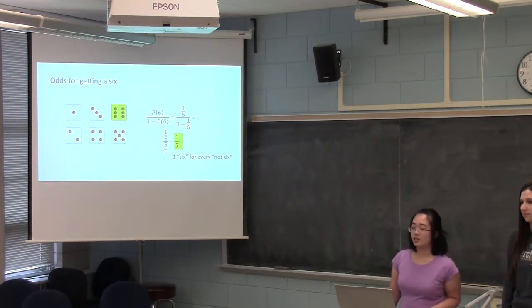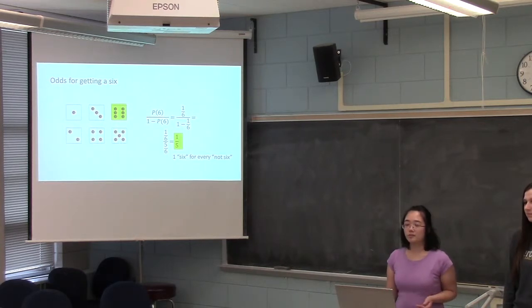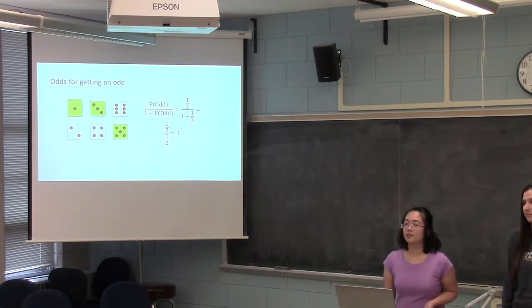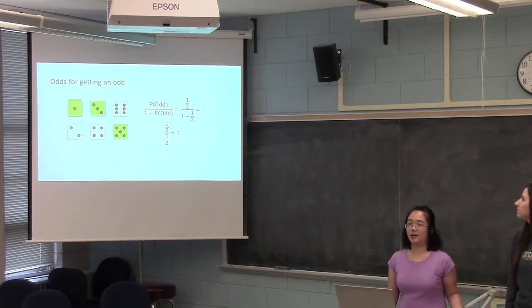So this means that the odds for this would mean that you're getting 1 six for every not 6. And then similarly, to calculate an odds ratio, you would need 2 odds to compare against.